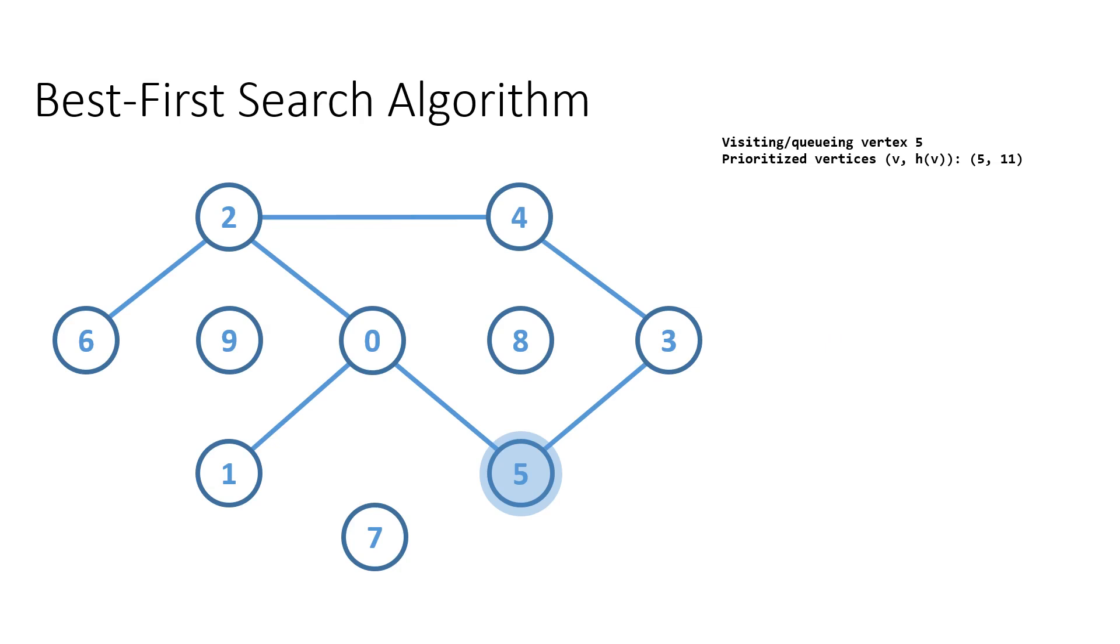When a vertex is explored, all its previously unqueued children are put to the priority queue. When we explore a vertex with the highest priority, the vertex is removed as indicated by the red line from the priority queue and added to the list of visited vertices.